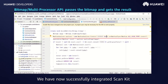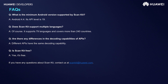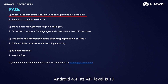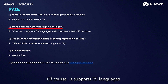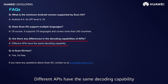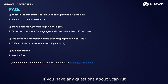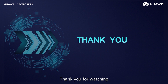We have now successfully integrated ScanKit using the multiprocessor API. Here are some FAQs. What is the minimum Android version supported by ScanKit? Android 4.4, API level 19. ScanKit supports multiple languages — it supports 79 languages and covers more than 240 countries. Are there any differences in the decoding capabilities of the APIs? Different APIs have the same decoding capability. Is ScanKit free? Yes, it's free. If you have any questions about ScanKit, contact us at scankit@huawei.com. That's all for today's episode. Thank you for watching.